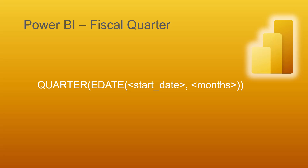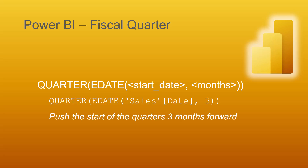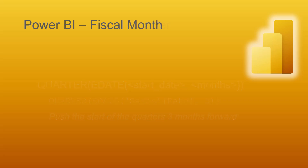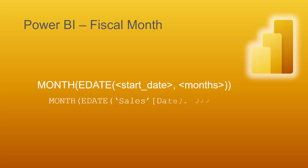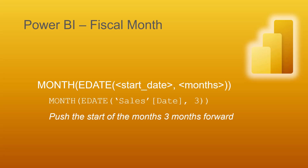For fiscal quarter, same idea — we'll use EDATE to push a date into the future, but only calculate the quarter. Taking October (normally Q4) and pushing three months forward lands in January, which is Q1, and we only keep the 1. For fiscal month, we use EDATE to push three months forward and capture only the month. October, which is month 10, becomes month 1 in the fiscal calendar.